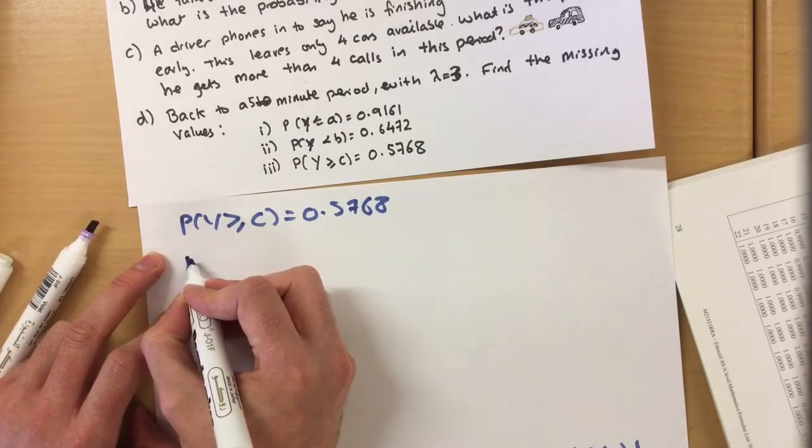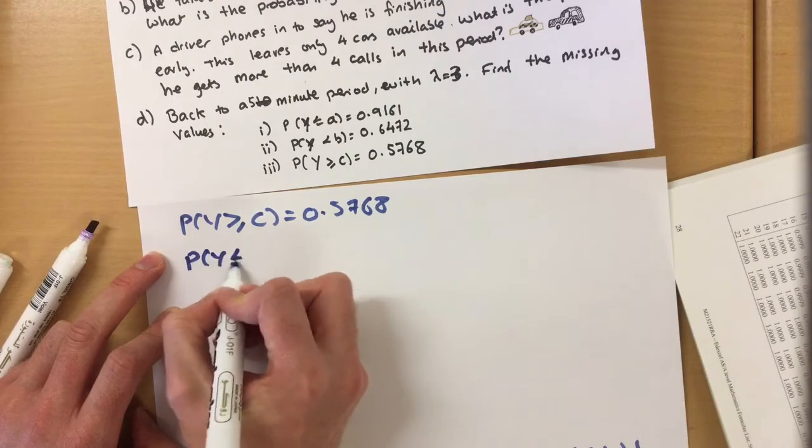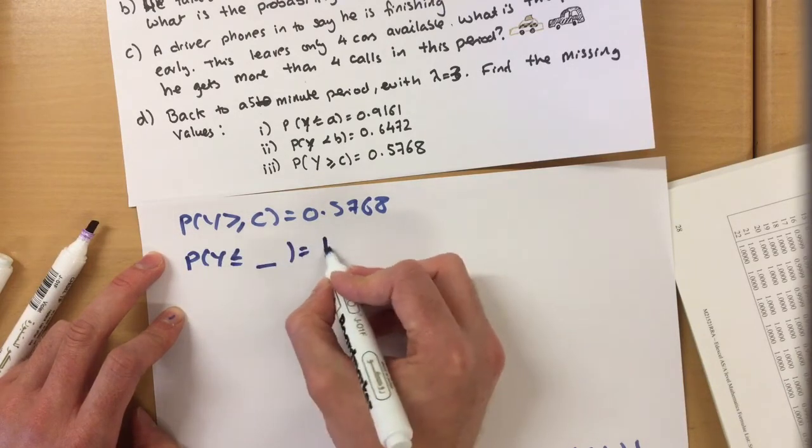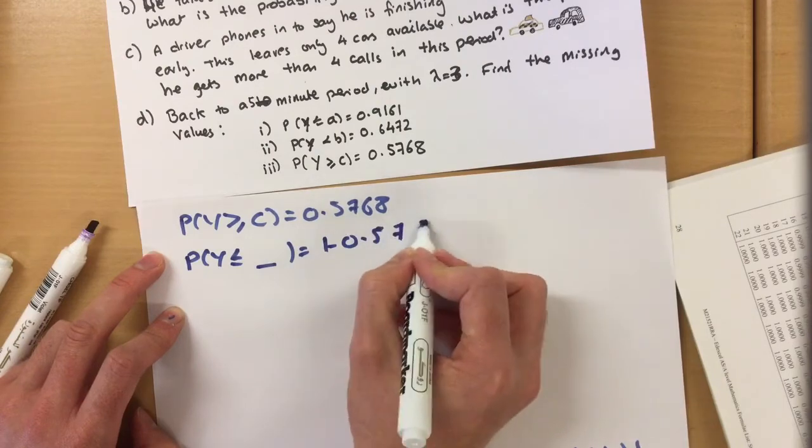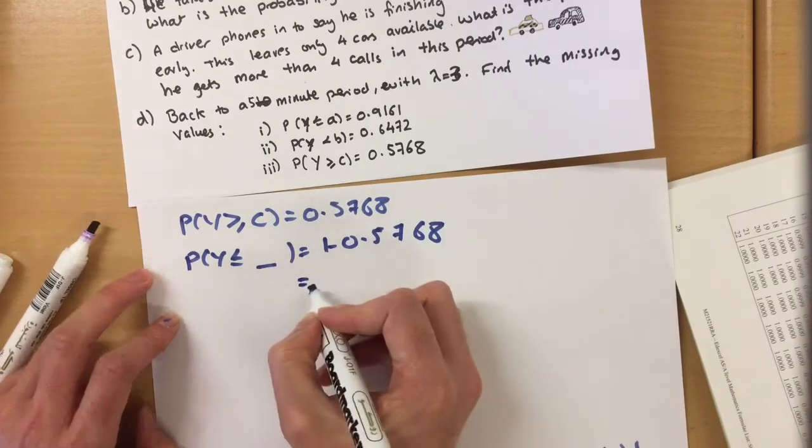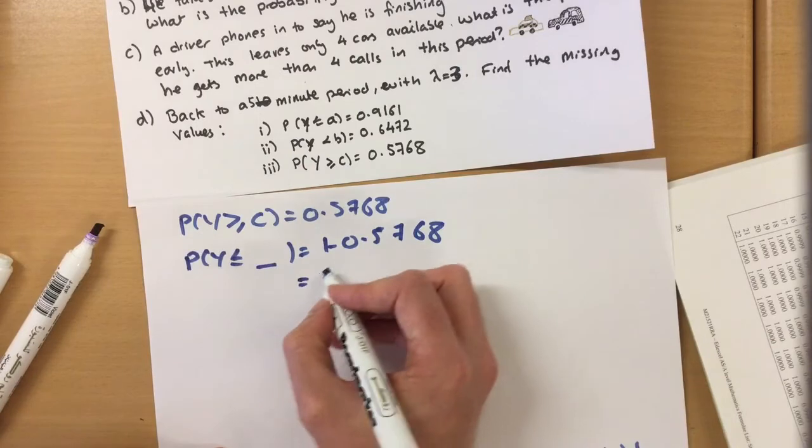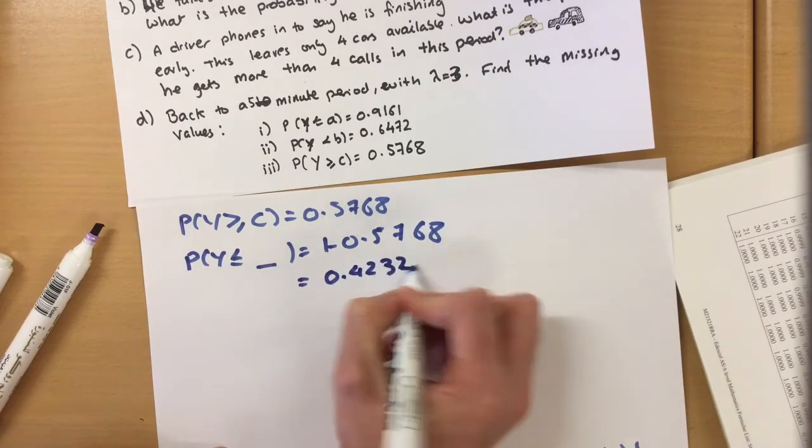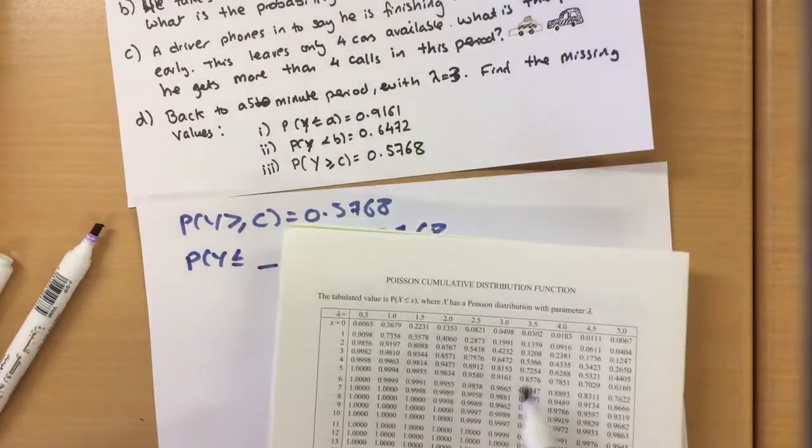So my first step is to find out what the 1 minus version is, and that would give us 0.4232.